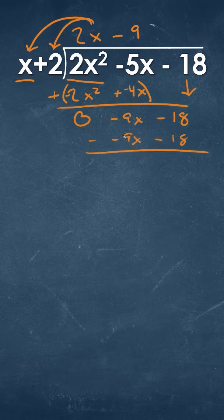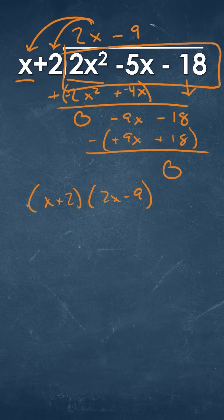If we subtract those, they cancel out, so we'll have a remainder of 0. That means x plus 2 times 2x minus 9 is the same as the original polynomial. So that is our answer.